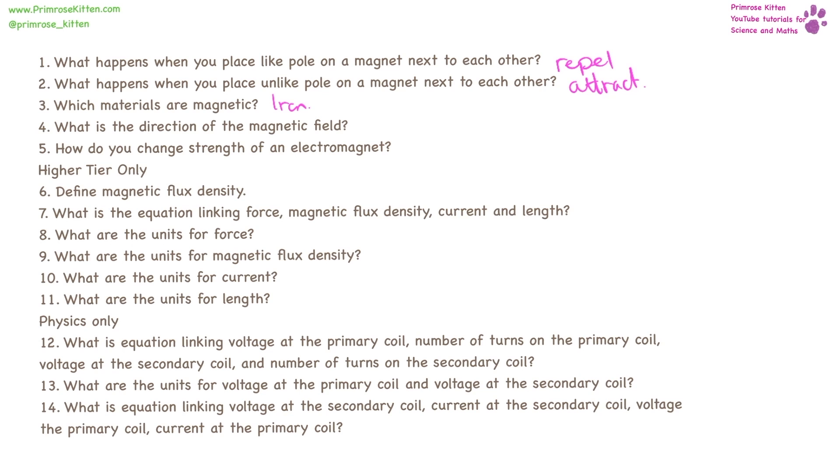Materials like iron are magnetic. The direction of the magnetic field is from north to south. You can change the strength of an electromagnet by changing the current or the length of wire.